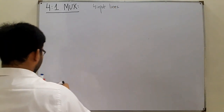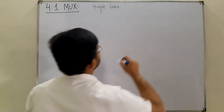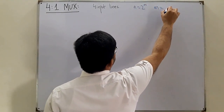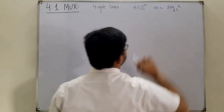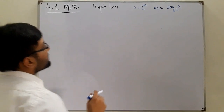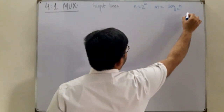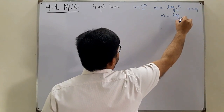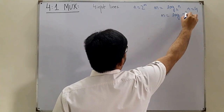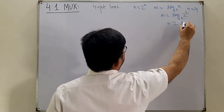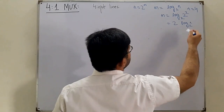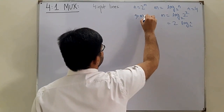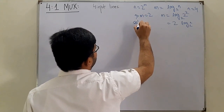The output line is of course 1. To determine the number of select lines, we use the formula n equals 2 to the power m, or m equals log base 2 of n. Since n equals 4, we have m equals log base 2 of 4, which is 2 to the power 2, so m equals 2. Therefore the number of select lines is 2.